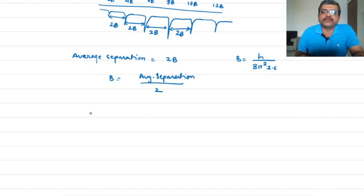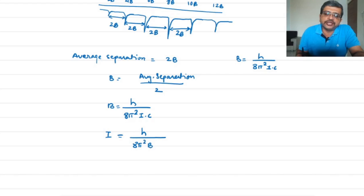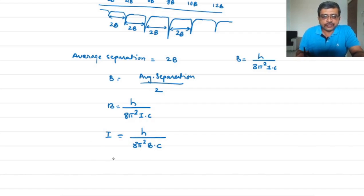We can find B as equal to the average separation divided by 2. Since B equals h upon 8π²Ic, we can determine the moment of inertia I as equal to h upon 8π²Bc. If we know B from the average separation, and we know c as the velocity of light and h as Planck's constant, we can calculate the moment of inertia I.